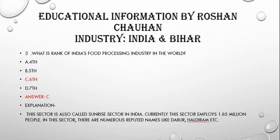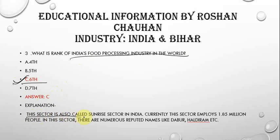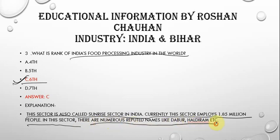The next question is: what is the rank of India's food processing industry in the world? The correct answer is 6th. This sector is also called the Sunrise sector in India. It currently employs 1.85 million people. There are numerous reputed names in this sector like Dabur, Haldiram, etc.